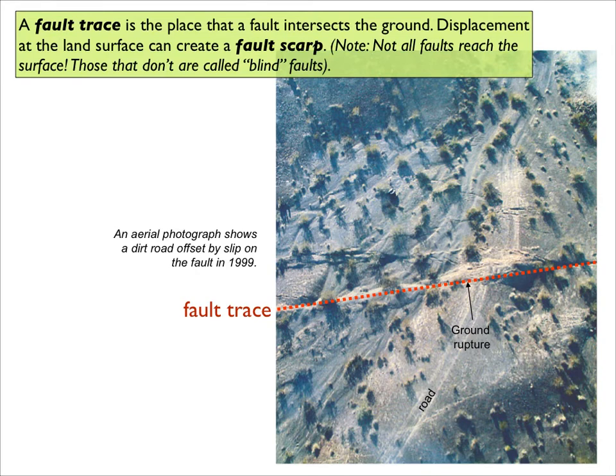Here's another picture of a fault trace, drawn directly onto an aerial photograph. The fault trace is simply the place where the fault plane — a two-dimensional planar surface — intersects the ground, also a two-dimensional surface. Where two planes meet, geometry requires that intersection to be a line. So the fault trace is the line you sketch in map view to show where the fault plane intersects the surface, shown here with a red line.